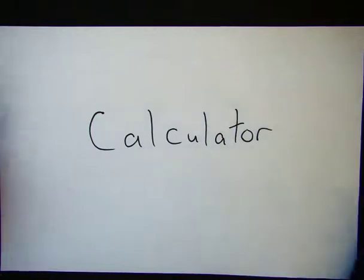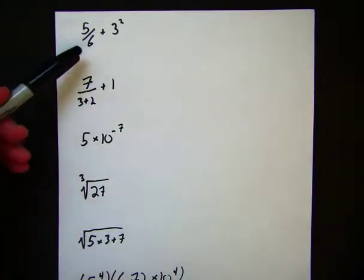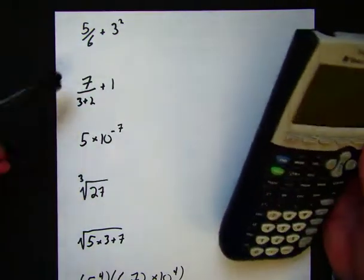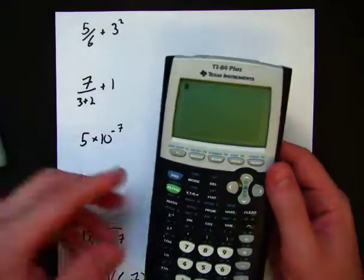So I'm going to go through several examples here, and here are the examples I'm going to go over. The first one here is just how to add up some simple numbers, how to do some simple arithmetic. I'm going to put 5/6 plus 3 squared in my calculator. How do I do that?